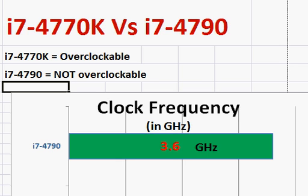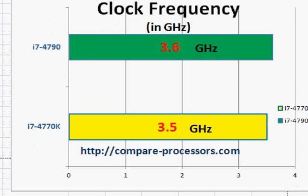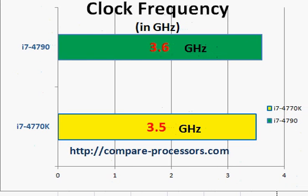Let's take a look at some of their basic specifications. In terms of clock frequency — the base clock, not the overclocked one — the 4790 manages to get a higher clock frequency than the 4770K even though it's cheaper. And that's why I'm saying if you are not overclocking, then you're better off going with the 4790 and saving around 50 dollars.